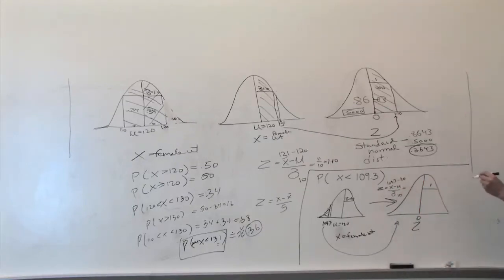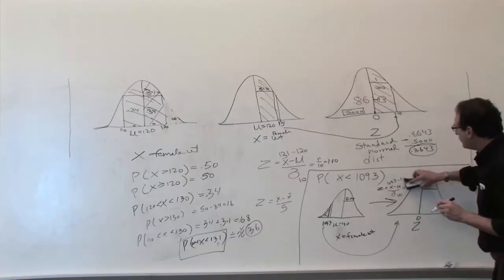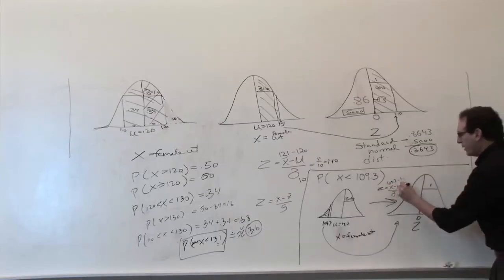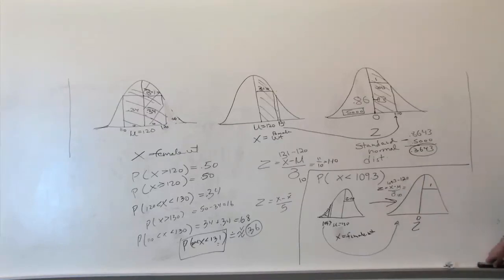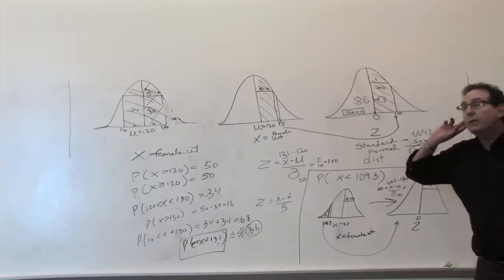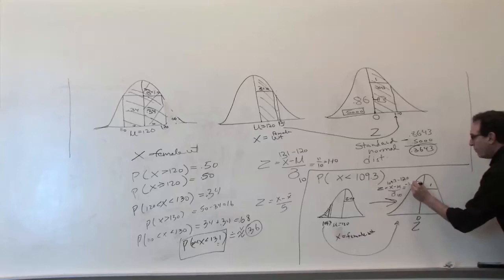We compute: 109.3 minus 120 — not 110, the average is 120 — divided by 10. That gives us negative 11.7 over 10, which equals negative 1.07. So the answer is negative 1.07. Negative 1.07 is a little to the left of negative 1.0 on the Z diagram, roughly around here.